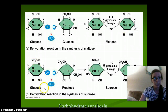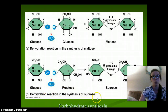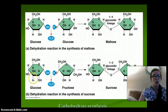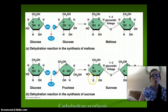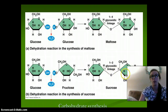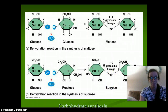Here's a dehydration synthesis reaction to make sucrose, which is table sugar. We have glucose and fructose. The OH on the glucose binds with the H of the fructose, it releases the water molecule, and then the two molecules are bound together by the O. And what do we have? Sucrose — table sugar.